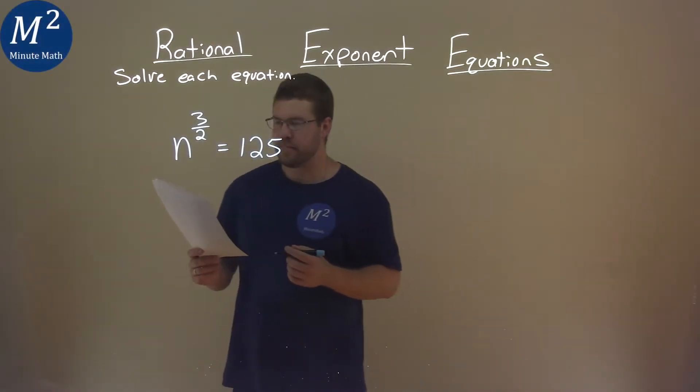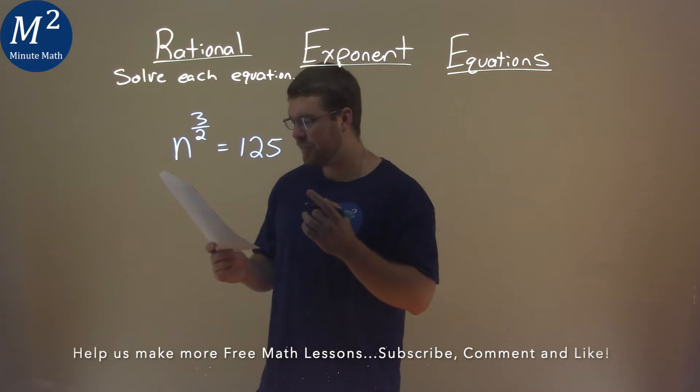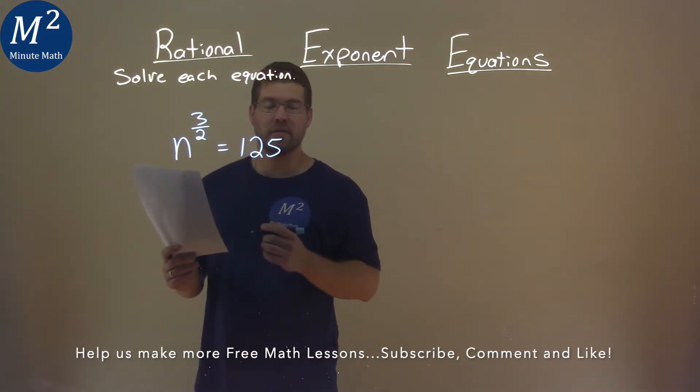We're given this problem right here, n to the three-halves power equals 125, and we're going to solve this equation.